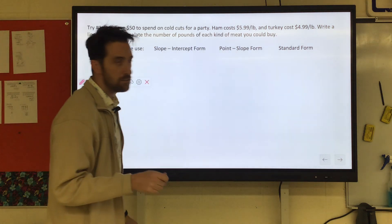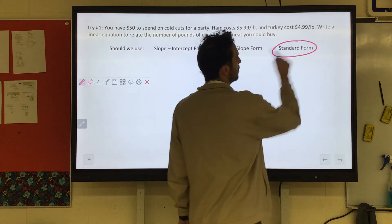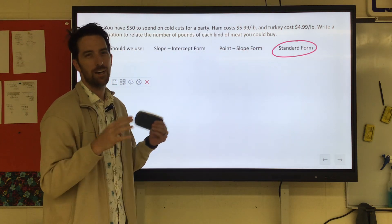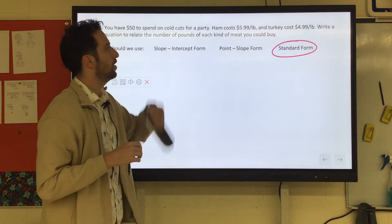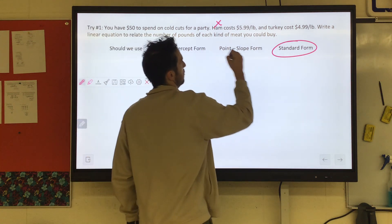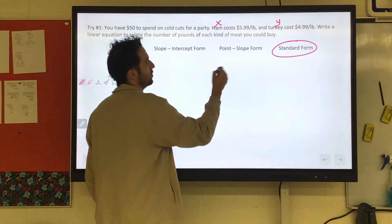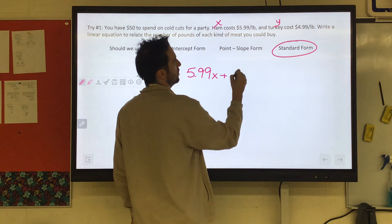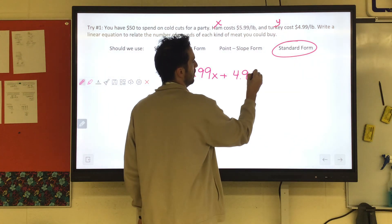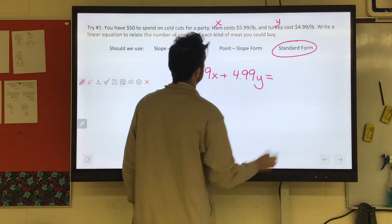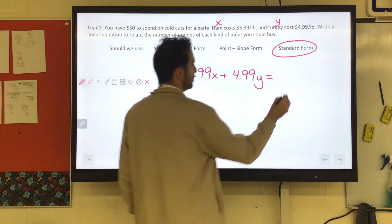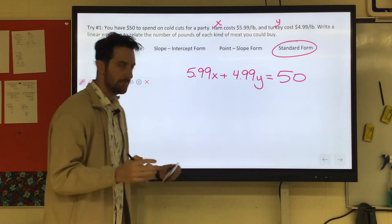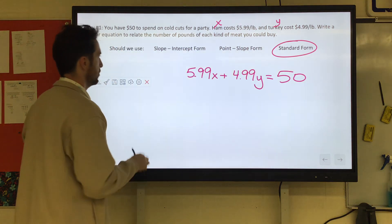Look, they gave you two rates for each of them. That goes well for standard form. Now I don't care which one you call x, which one you call y, it doesn't really matter. I'm going to call ham x, just because it's listed first. I'll call turkey y. So ham is $5.99 a pound, $5.99x plus turkey's $4.99y equals how much money do we have? 50 bones. There it is folks, yes! That wasn't too bad, so let's try another one.